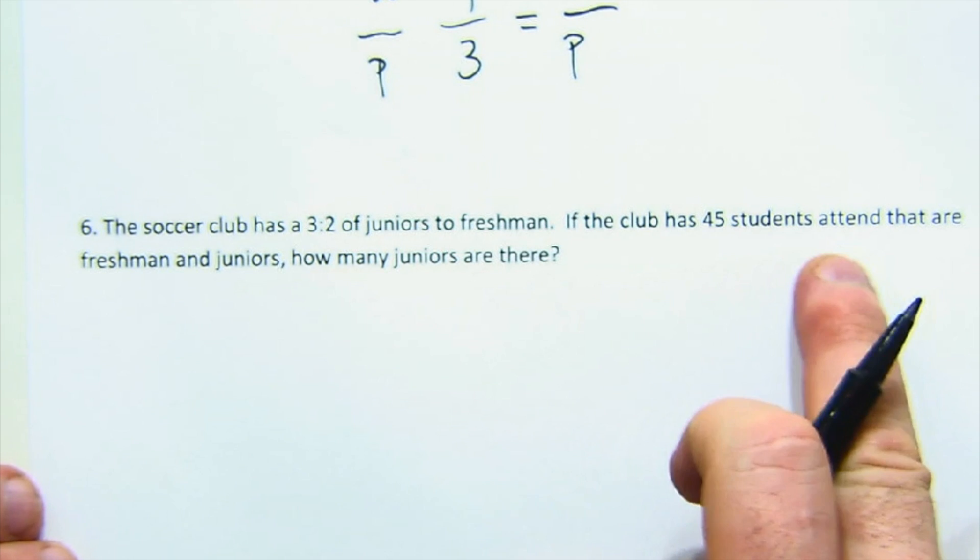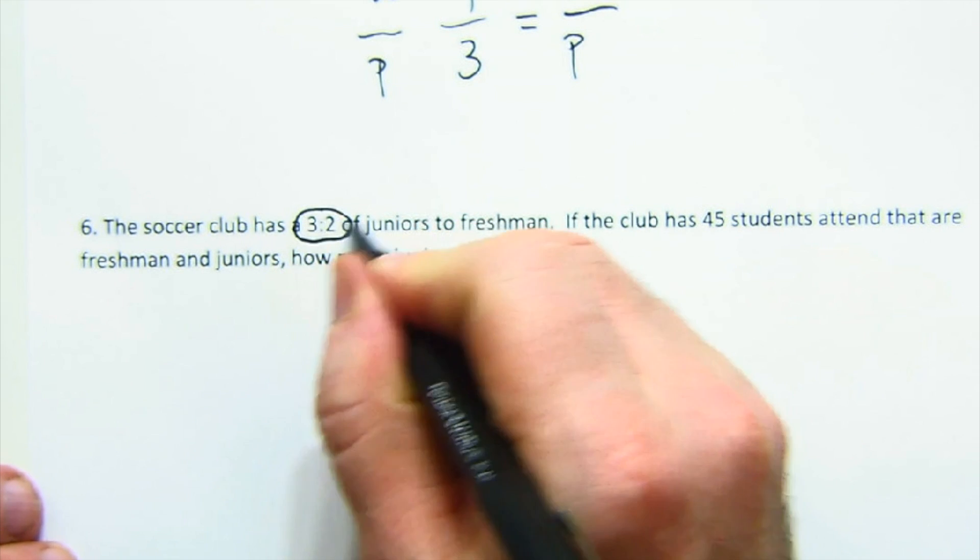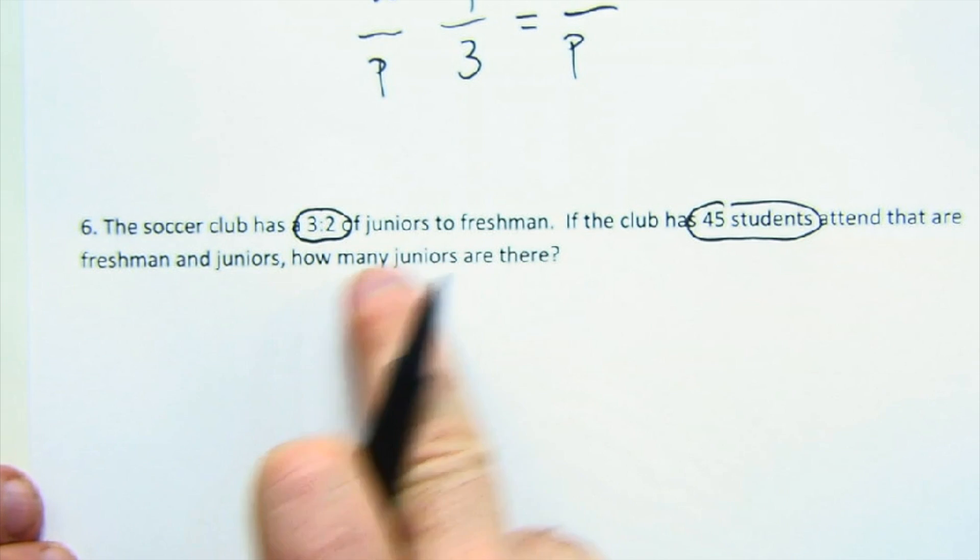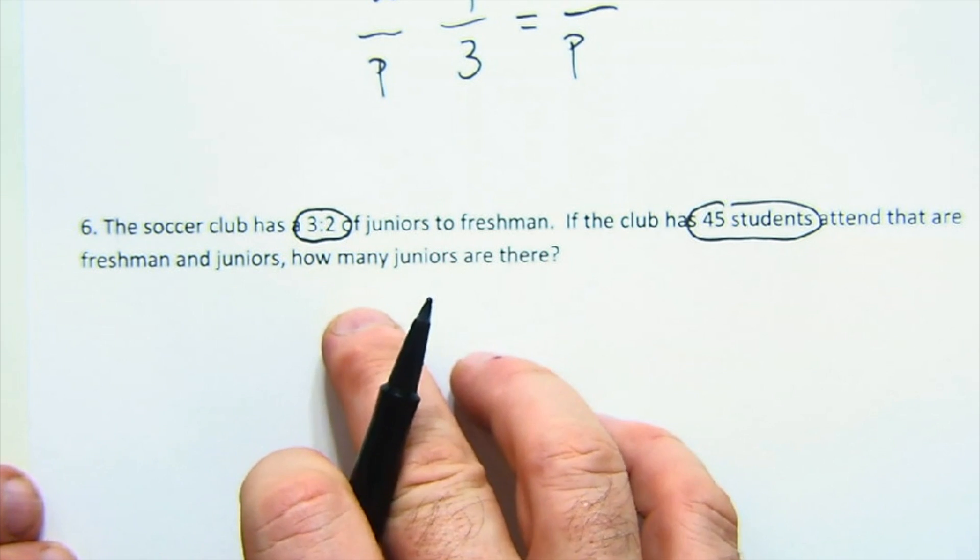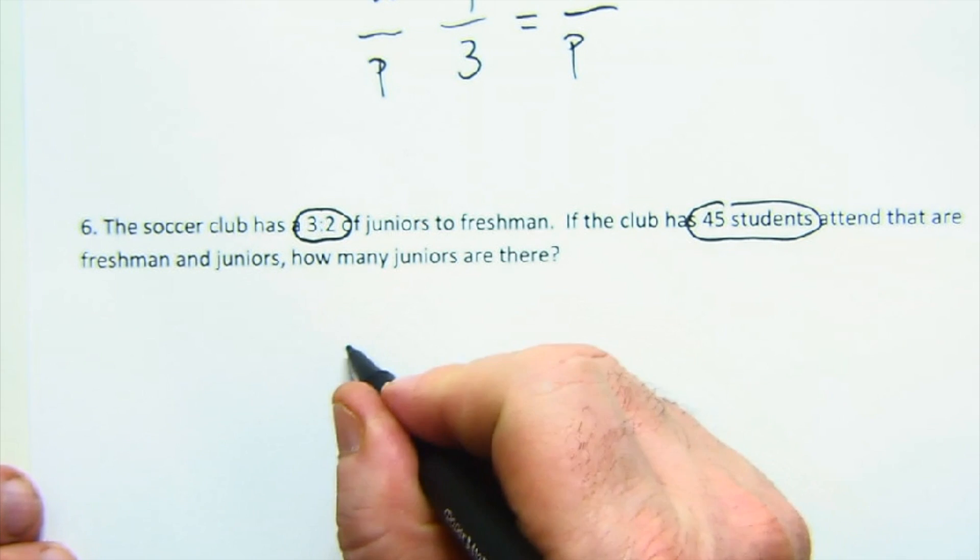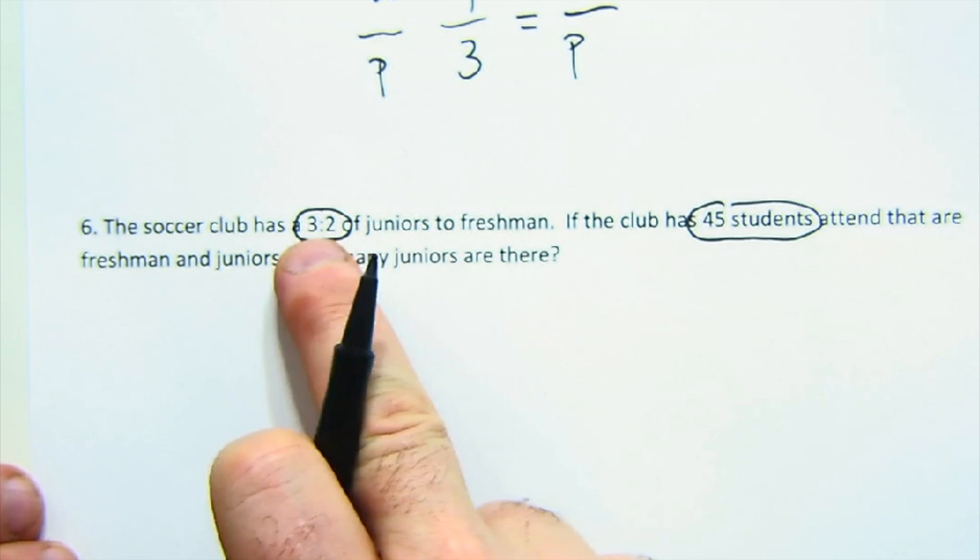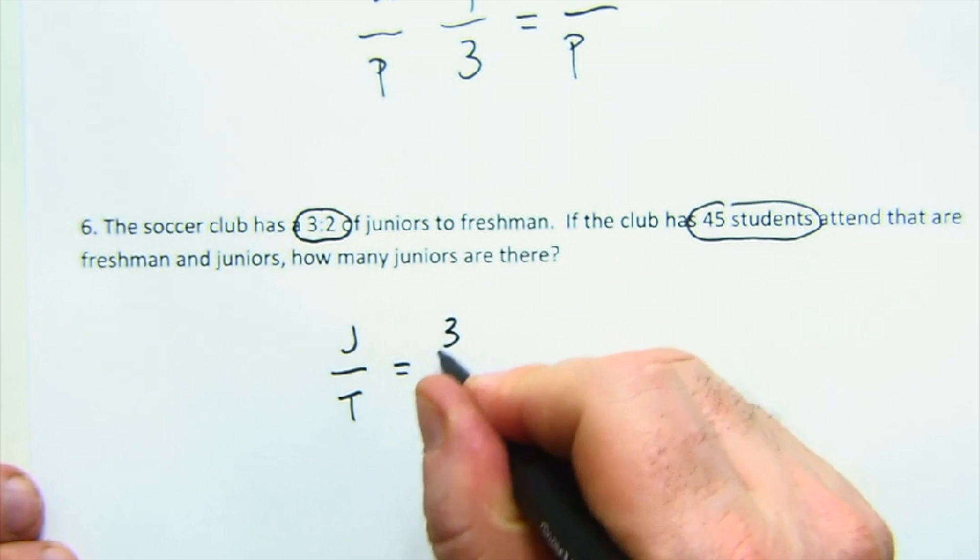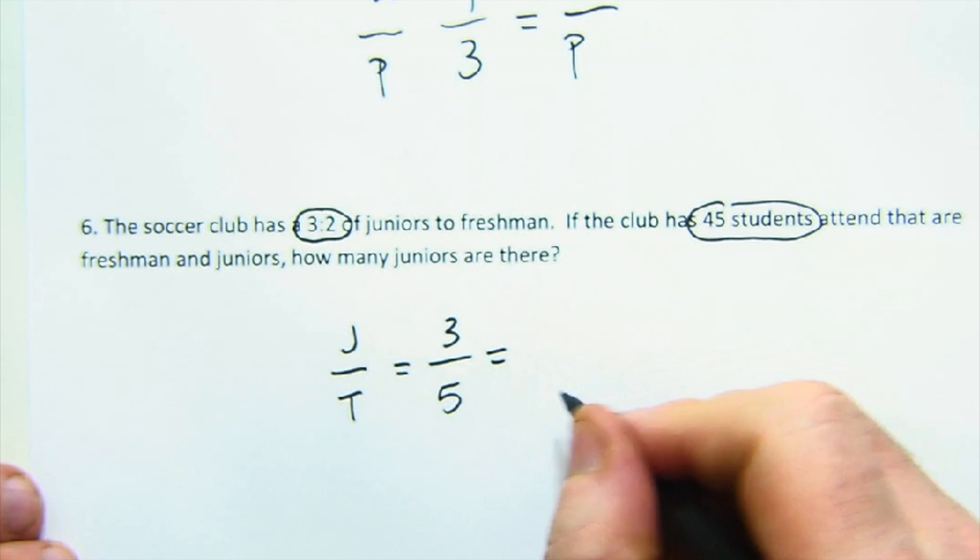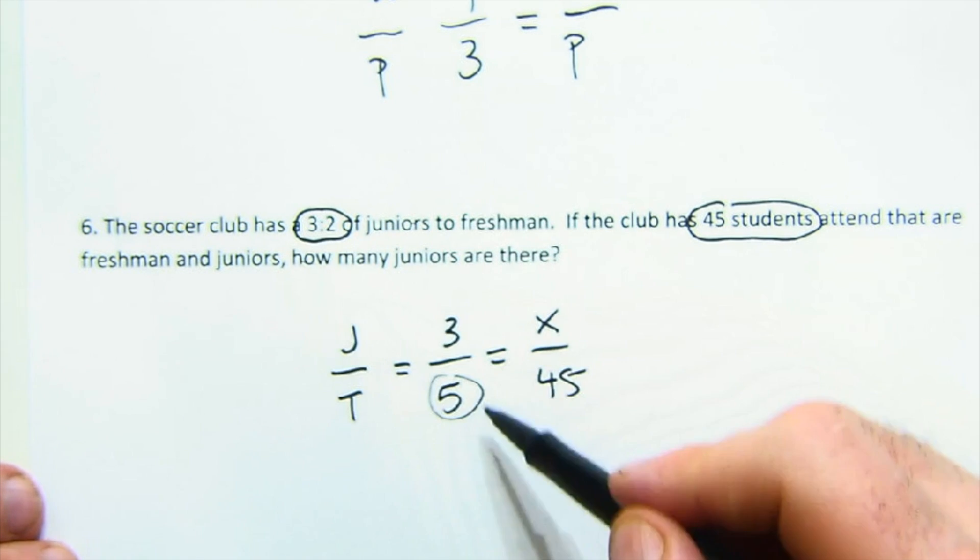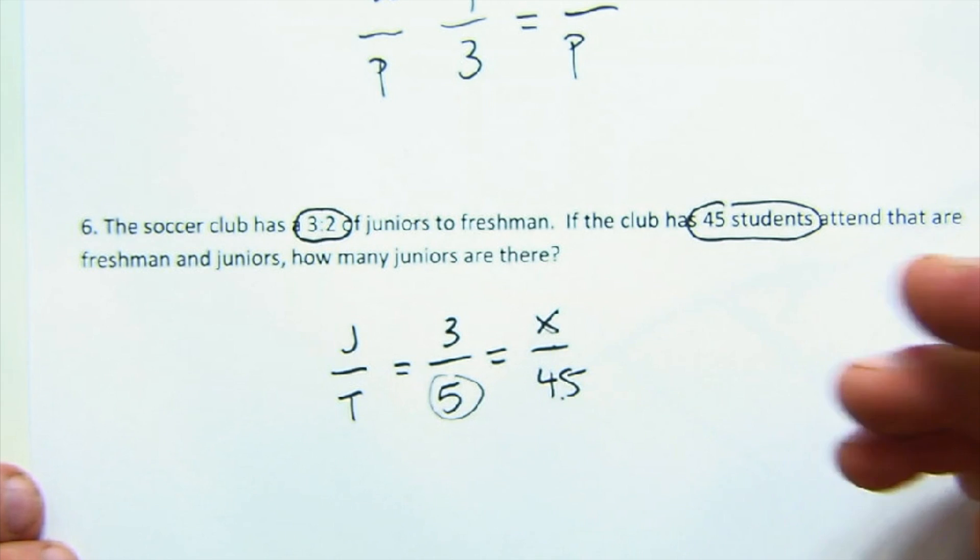Juniors to freshmen is 45 in the club. Again, this is about juniors and freshmen, but the 45 is about total students. So you'll create a ratio probably about totals. How many juniors are there? So I'd probably go juniors to total. Three parts are the juniors, five parts is the total, 45 students. And I'm interested in juniors. Three parts junior, five parts total, x is juniors, 45 is total and so on. Okay. Enjoy. They're fun.